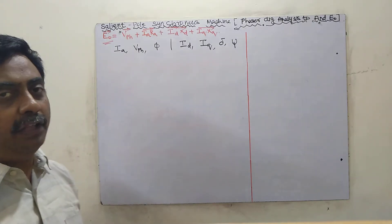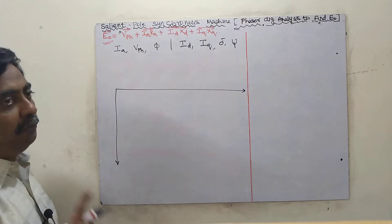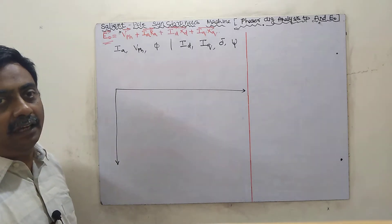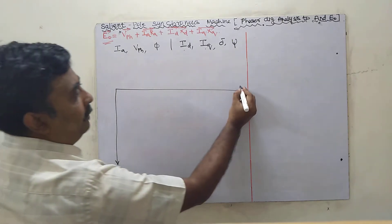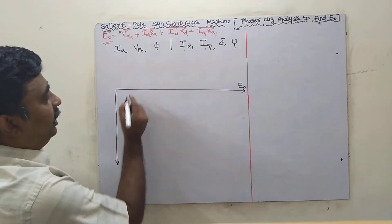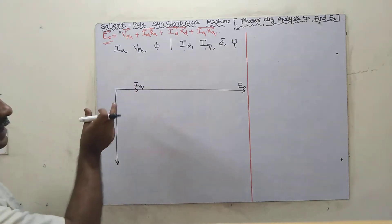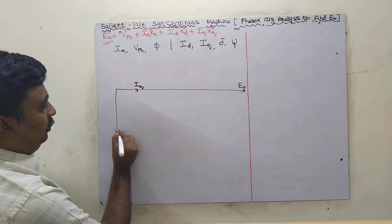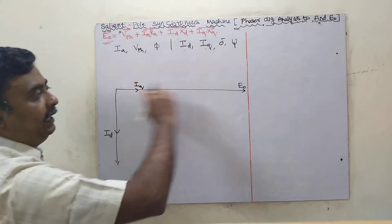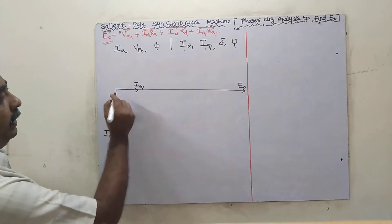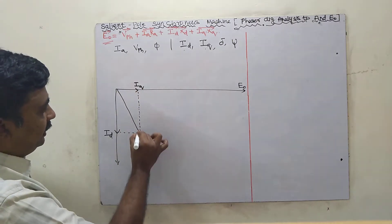First, I am drawing the X axis and Y axis. I have to draw the current IA. IA consists of two components: IA = ID plus IQ. IQ will be along E0 — I am taking E0 along the X axis — and the magnitude will be equal to IQ. ID will be perpendicular to E0. So IQ is along E0 and ID is perpendicular to E0. The addition of IQ plus ID gives IA, which is the only known quantity.